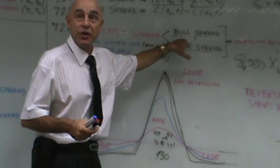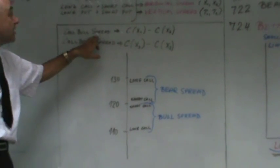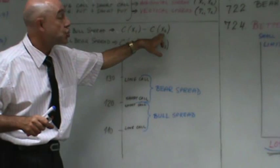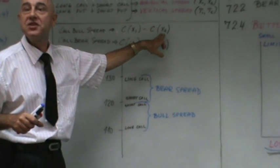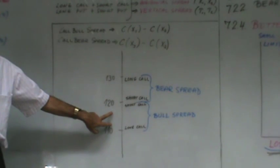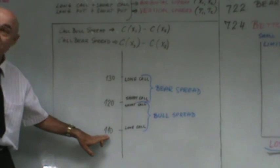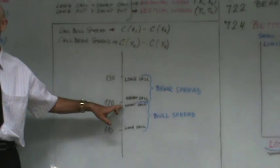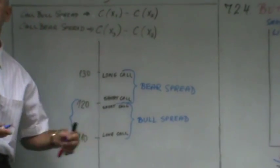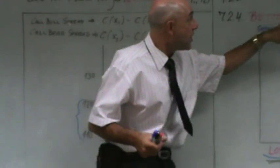A bull spread by definition means you're going to have a long call with a lower strike and a short call with a higher strike. This is the definition. You're long the bull spread, so this is a long call spread. Look at the picture: you create the bull spread by going long call at 110 and going short call at 120. That piece is the bull spread.